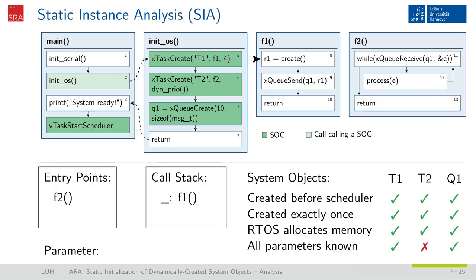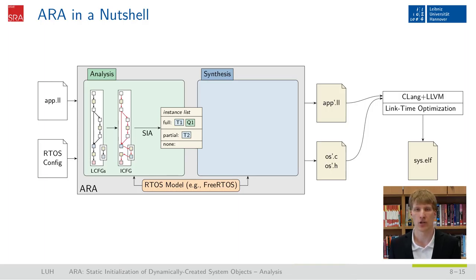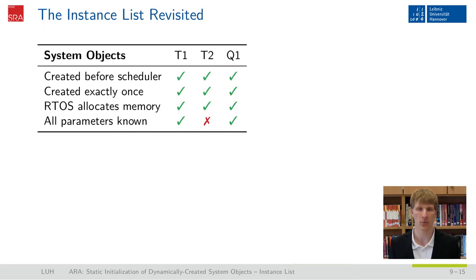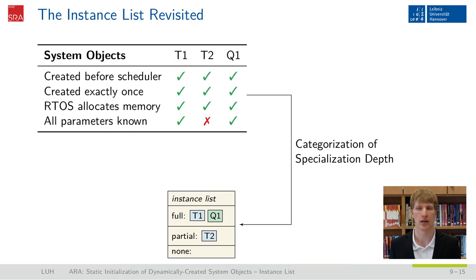We have found all the information for our instance list. Now that we have finished our analysis, we step over to generate the new operating system objects and functions. But before we can do so, we have to transform our found knowledge into an instance list usable for the specialization. We use the information about those system objects to classify them regarding their maximal possible specialization. For task T1 and the queue, full specialization is possible as we know all their parameters. This means we are able to statically provide the needed memory and fill it with all information it would be filled during runtime. For task T2, as not all parameters are known, we cannot enqueue it into the scheduler's ready list — as we don't know its priority — hence only a partial specialization is possible.